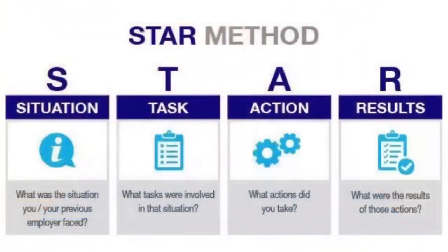S is for situation — you're going to set the scene. T is for task — you're going to describe what the purpose was. A is for action — you're going to explain exactly how you fit into that entire situation, whether you were part of the team, you were managing the team, or what parts you had control over. R is for results — you're going to share exactly what happened as far as the results.